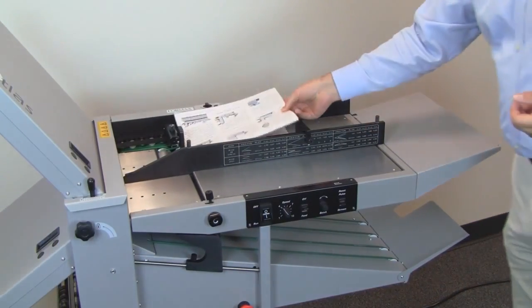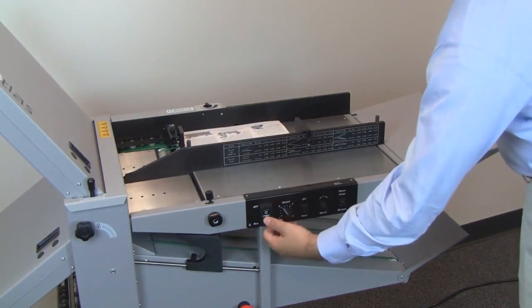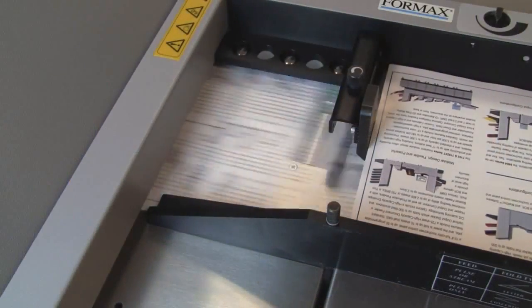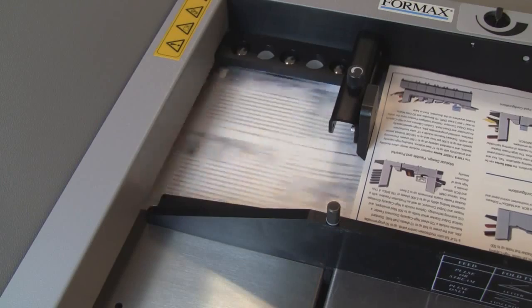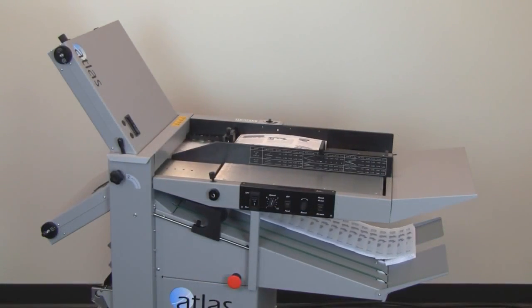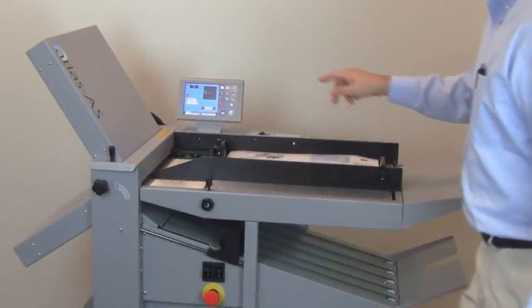Load the paper onto the in-feed table. Flip the roller and air switch to the on position and then press start. The Atlas features a stream feed or pulse setting that comes in handy for feeding different paperweights. Batch counting can also be selected for small grouped runs.